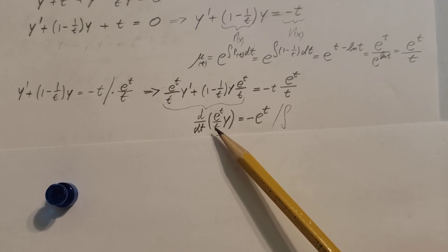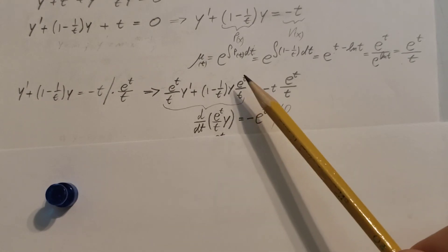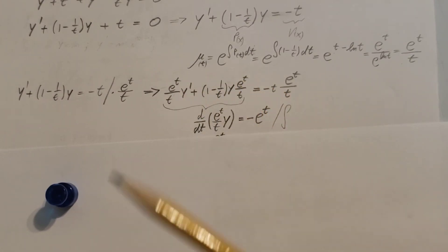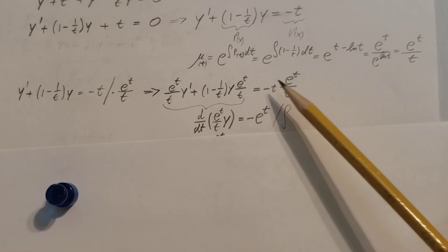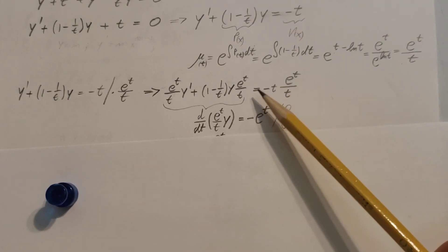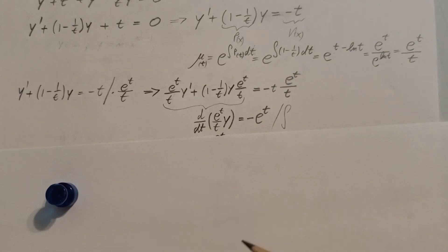This thing turns into this right here on this side. The t cancels out, so all we have is minus e to the t.